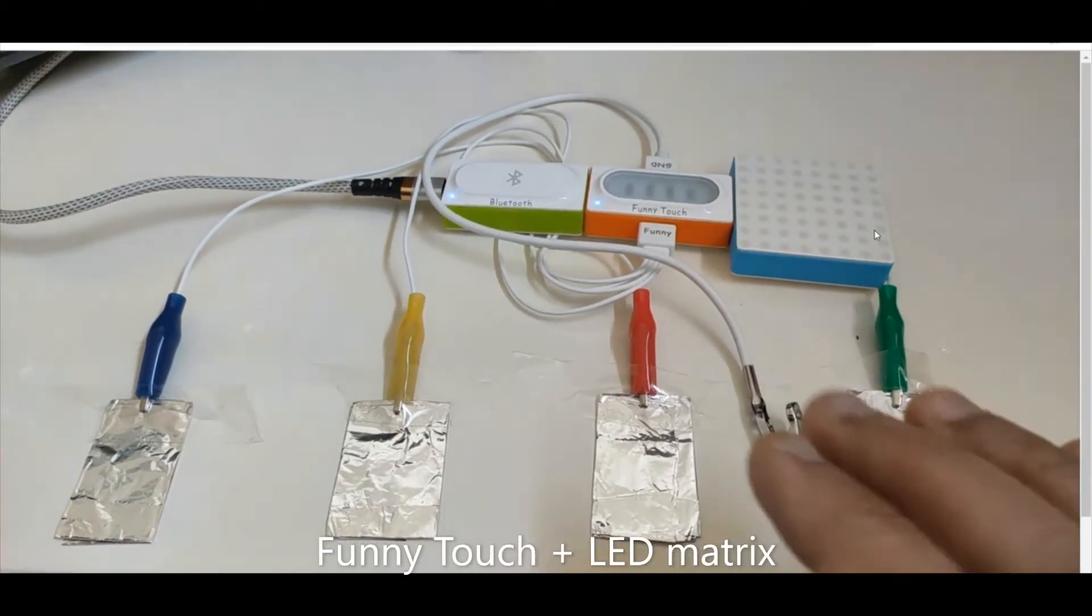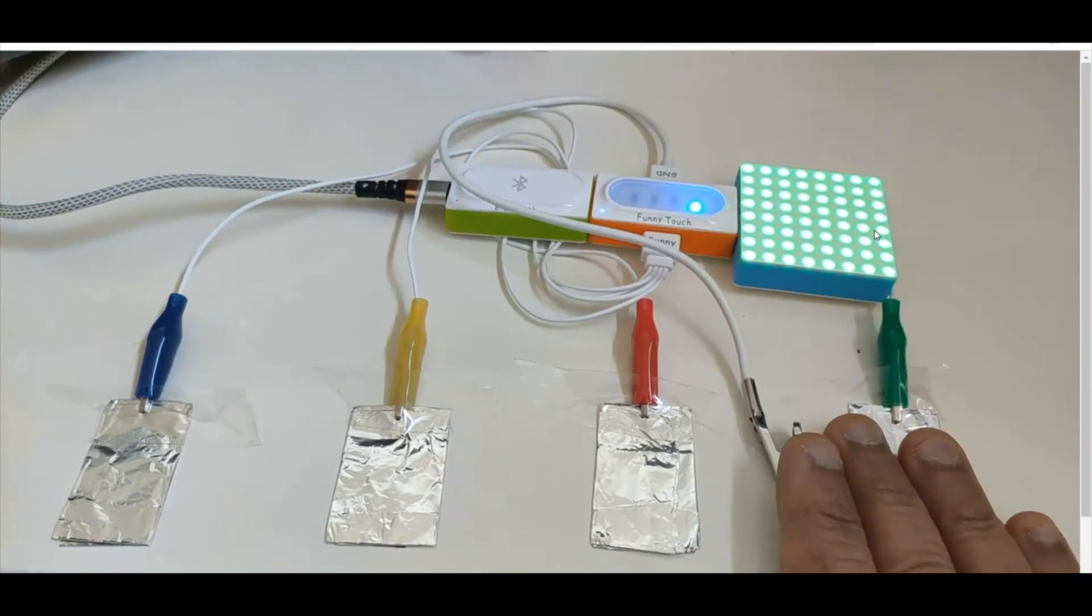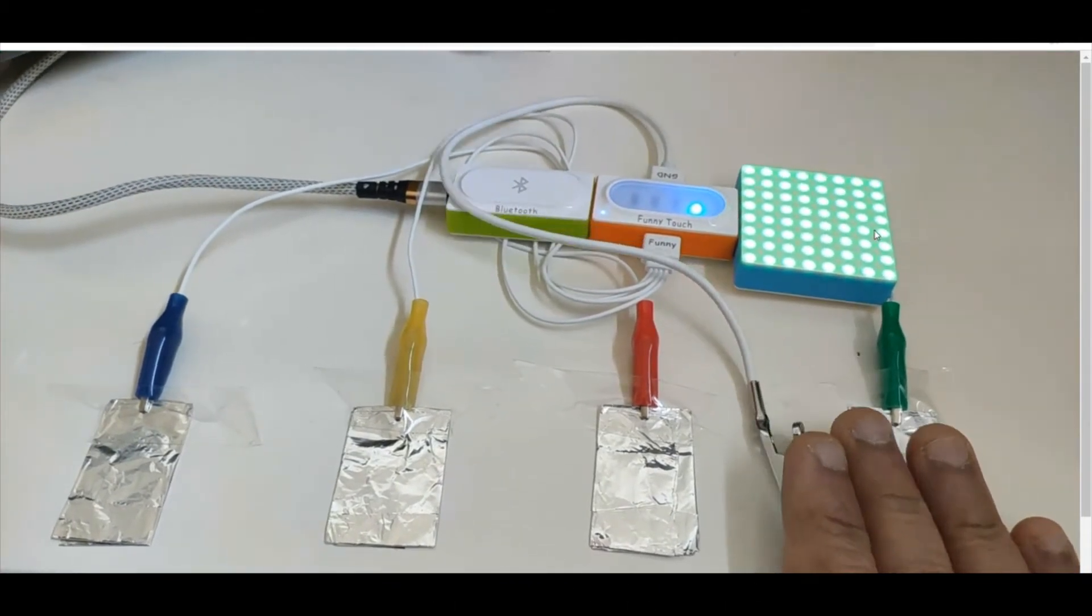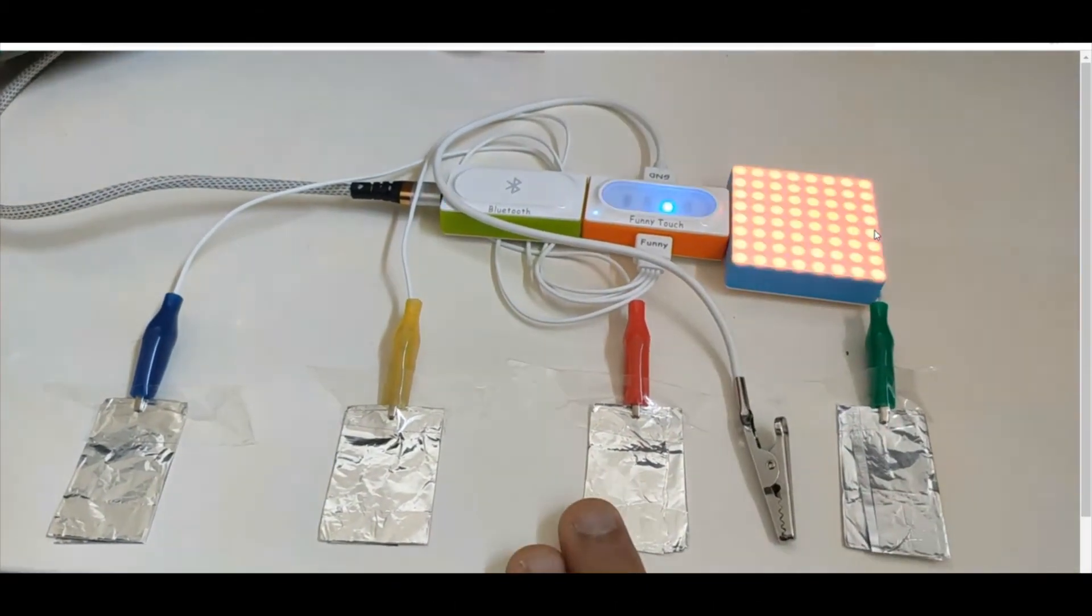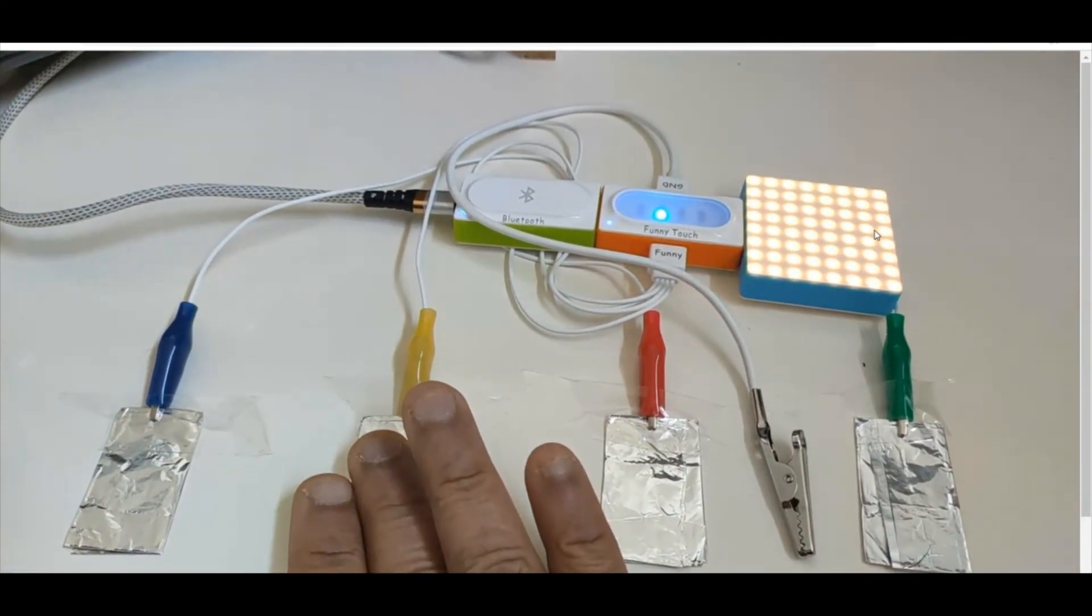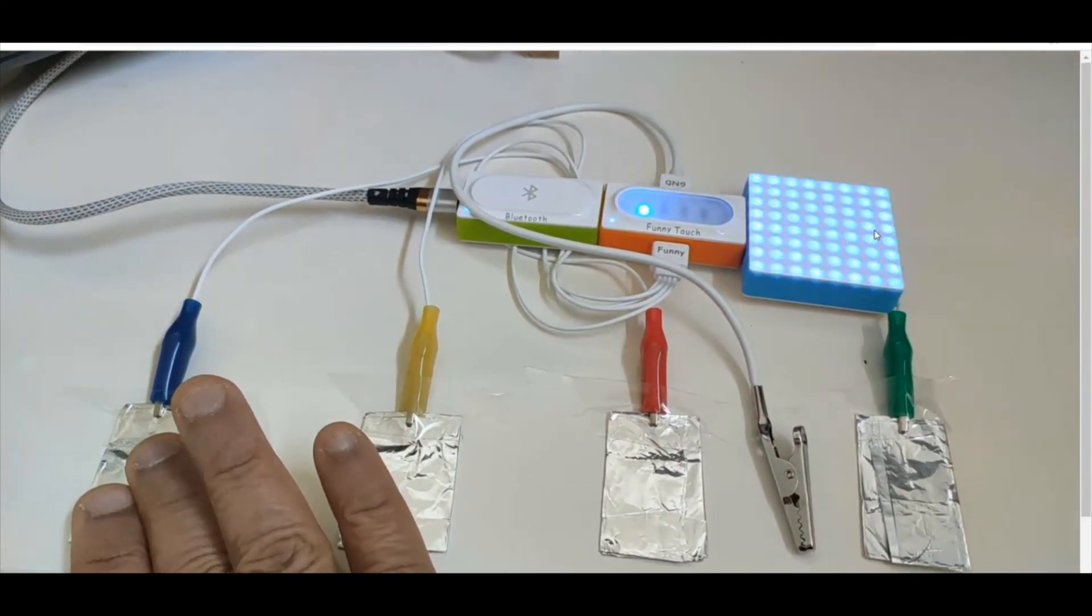For example, I can detect and make the green touch as indicated by the green LED panel. I can have the red one, yellow one and of course the blue one.